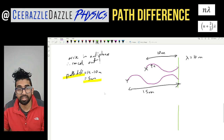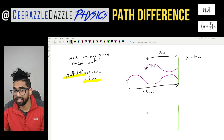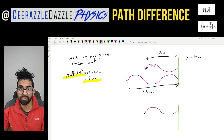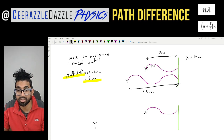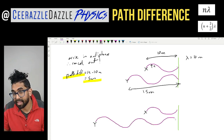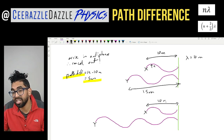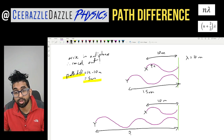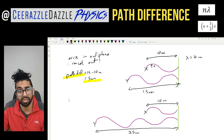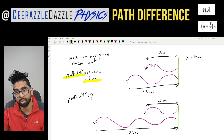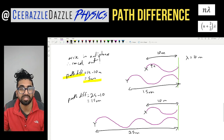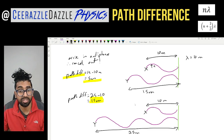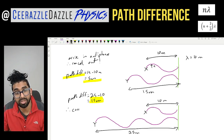Drawing it again: X stays at 10 meters, and Y is shifted so its distance is 25 meters. The path difference is 25 minus 10, which equals 15 meters. We can clearly see it arrives in antiphase, so the two waves cancel out.